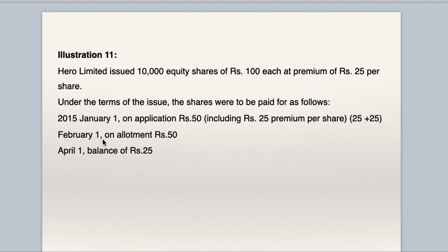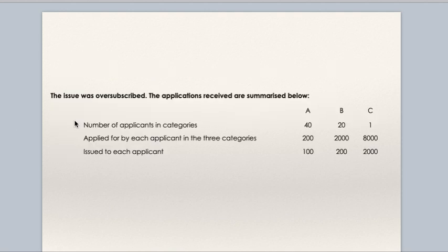On February 1st, on allotment Rs. 50, and April 1st, balance Rs. 25. So, on application Rs. 50 including Rs. 25 premium, on allotment Rs. 50, and on first and final call Rs. 25. That is how this Rs. 125 the company has called.